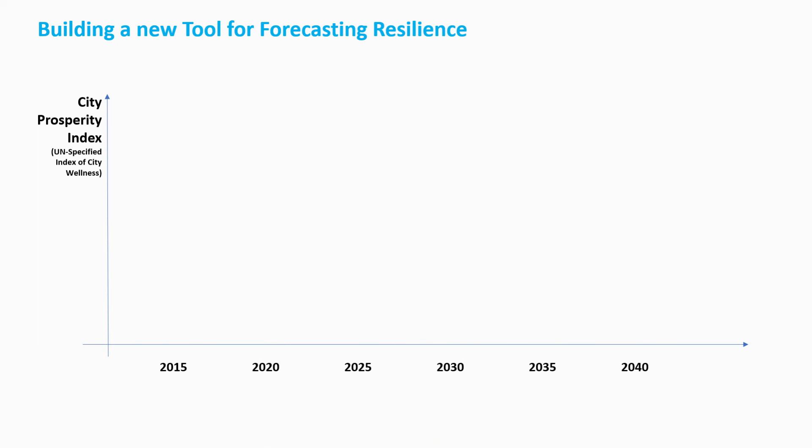What we want to do with the tool is model resilience. We need to know how resilient a city, municipality, or county is going to be over time. One of our first light bulb moments was that we don't measure resilience with the tool — we measure prosperity or productivity of a city. Resilience is really the ability of a city to bounce back and become productive again after a disaster. So let's put prosperity and productivity metrics on our y-axis.